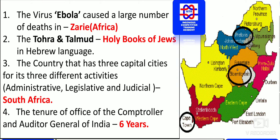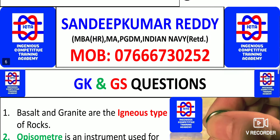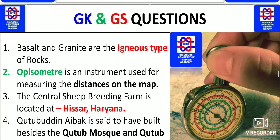The tenure of office of the Comptroller and Auditor General (CAG) of India is six years.